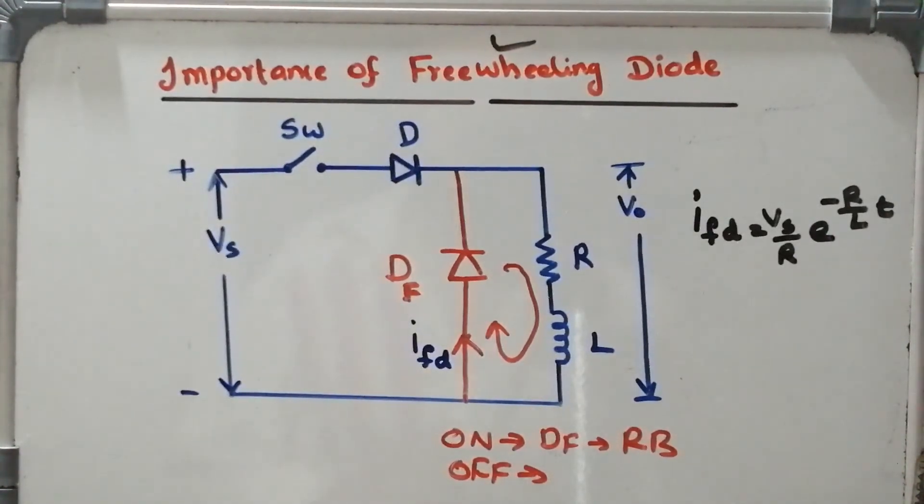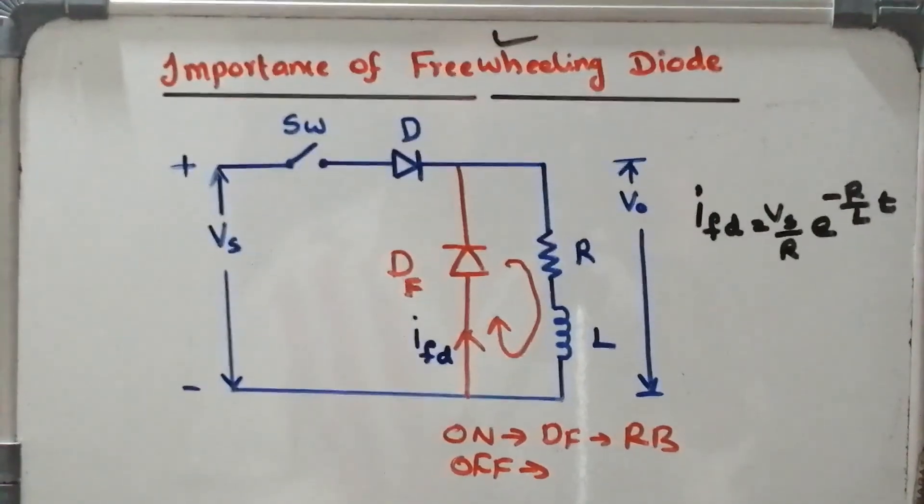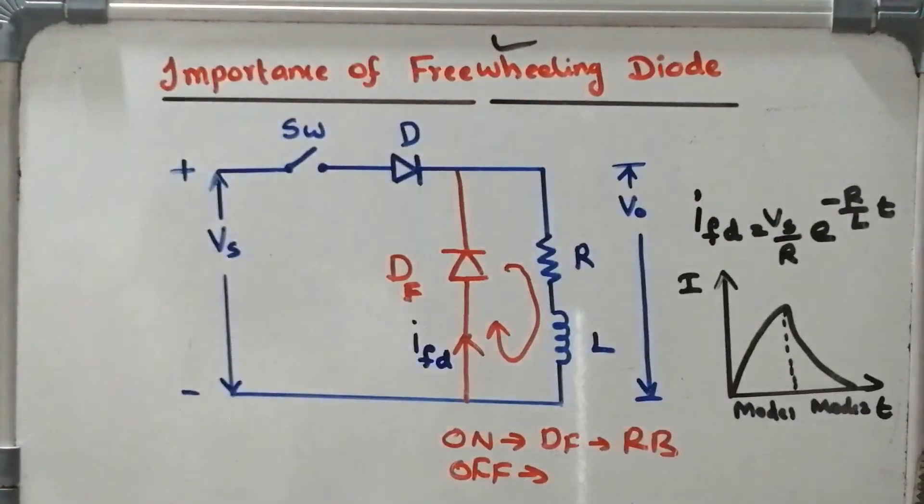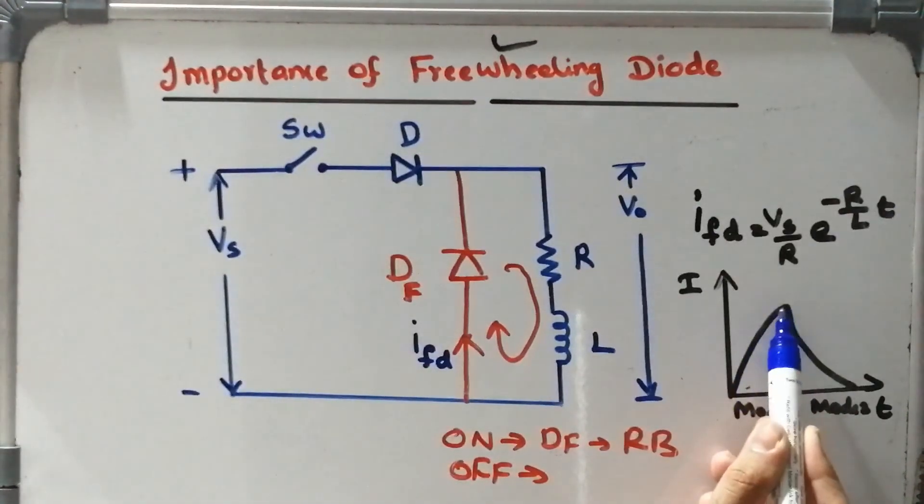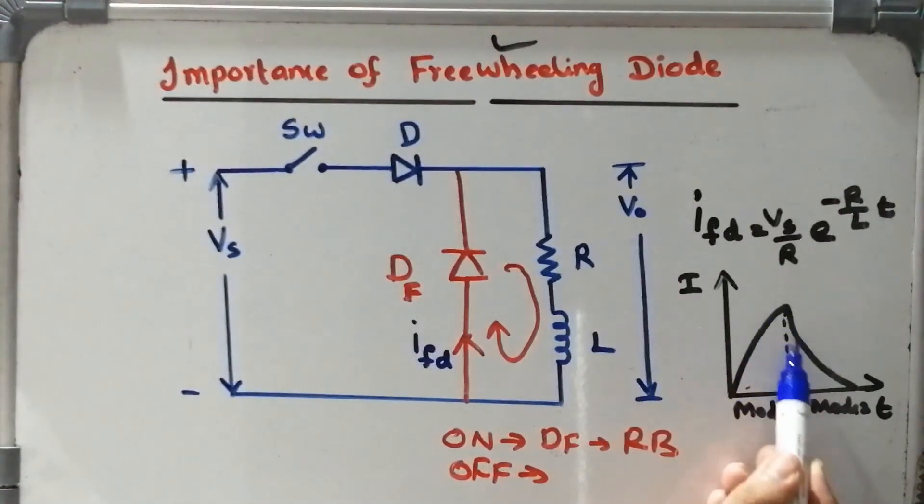Where Vs is the supply voltage, R is the value of resistor, and L is the value of inductor. During mode 1 energy will be stored inside the inductor. Later on whenever the switch is off, energy will be released. You can represent this with the help of waveform also.